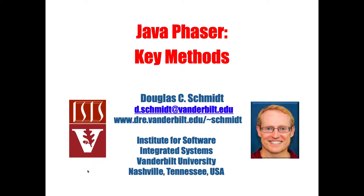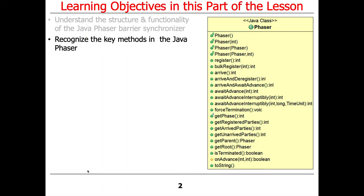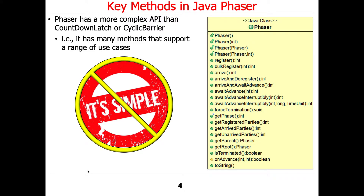Now that we've talked about the structure and functionality of the phaser, let's talk about its key methods. As you can see, its interface — unlike cyclic barrier, unlike countdown latch — is much more complicated. There are a lot more methods that it defines. The cyclic barrier had basically one method, await, and the countdown latch had two methods, await and countdown, and the phaser has gobs and gobs of methods.